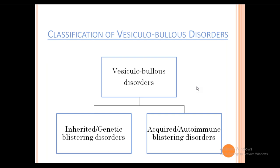We classify the vesicobullous disorders as either inherited or genetic blistering disorders, or acquired or autoimmune blistering disorders. The acquired or autoimmune blistering disorders are more common than the inherited ones.